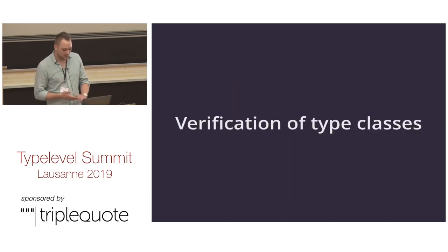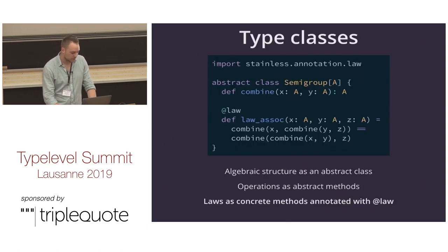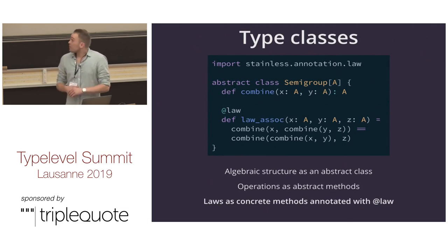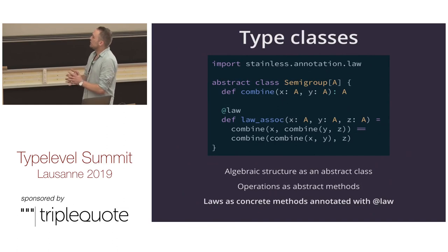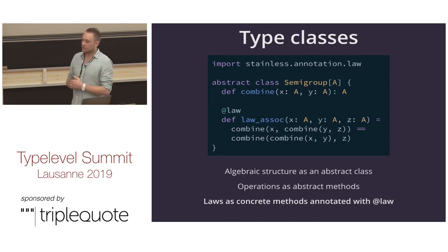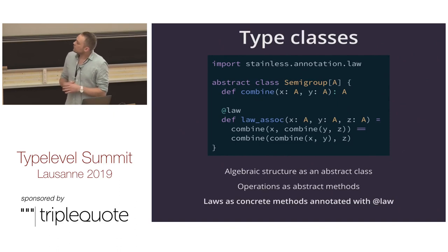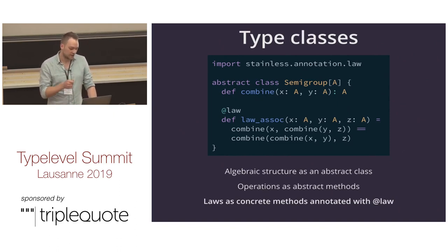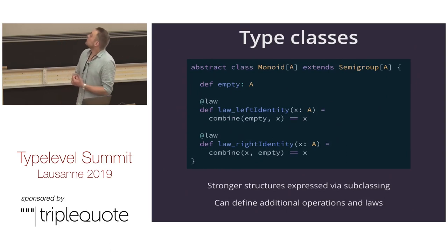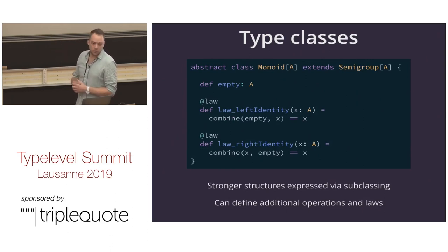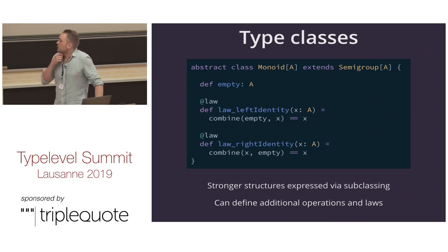The main piece of the talk is the verification of type classes. Here I have the standard semigroup type class. The key difference is that we can express the associativity law directly within the type class definition, using the @law annotation from the Stainless library. This instructs Stainless that this is a law it will have to check — that the law holds for every instance of the semigroup type class.